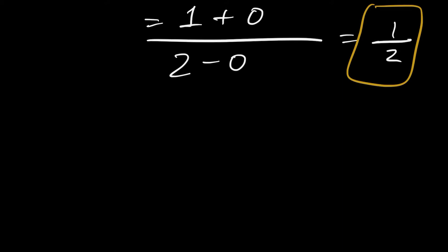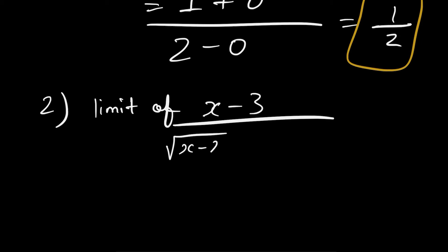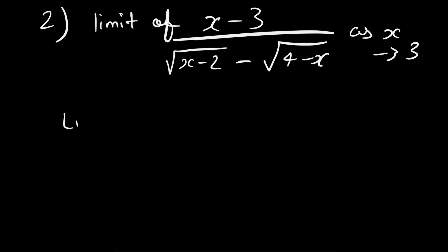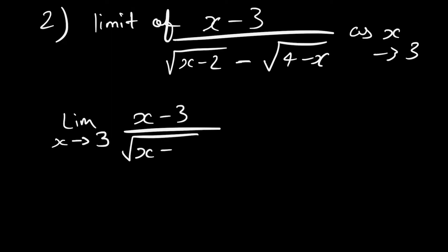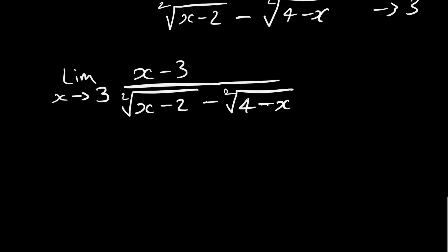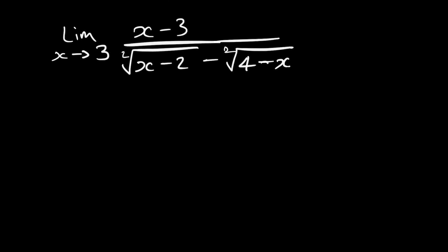For the second problem in limits: find the limit of x minus 3 divided by root x minus 2 minus root 4 minus x, as x approaches 3. We write this as: limit x approaches 3 of x minus 3 divided by root x minus 2 minus root 4 minus x, where both are square roots. The denominator is irrational, so we need to rationalize it.